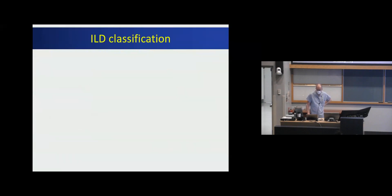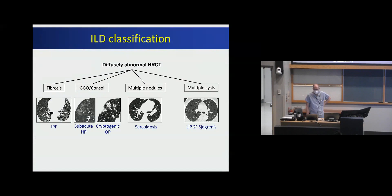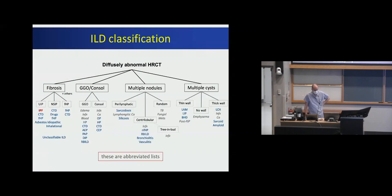That brings us to the present day. From an ILD perspective, if you have a diffusely abnormal CT scan, I think of four main patterns: fibrosis, ground glass opacification or consolidation, multiple nodules, and multiple cysts. Within the fibrotic category there are more specific patterns like UIP, NSIP, and HP patterns, and within each of those there are more distinct clinical diagnoses — with IPF highlighted specifically. There are really long lists, literally a couple hundred different things that could be categorized here.